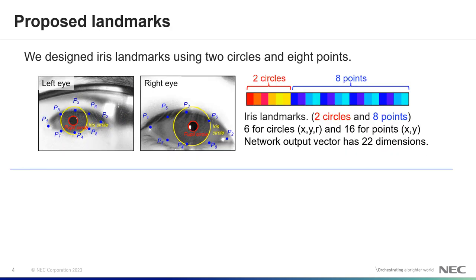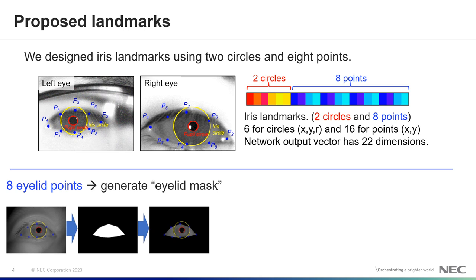Next, we explain the proposed landmarks. Our proposed landmarks are two circles and eight points. Both are 6 and 16 dimension vectors. Totally, the network output is represented as a 22 dimension vector. Eight iris points are used to generate the iris mask like the bottom left figure.